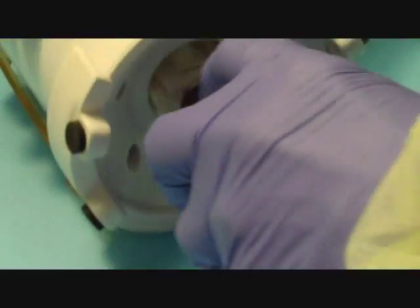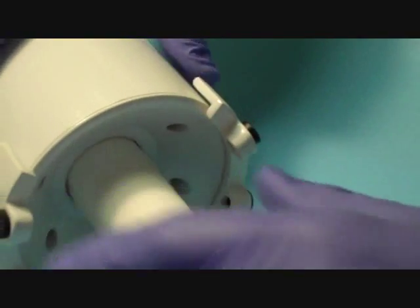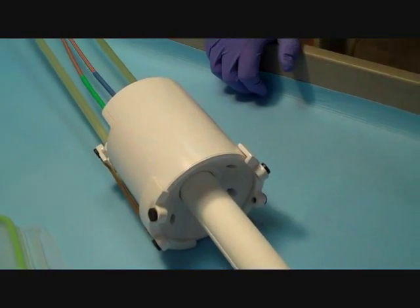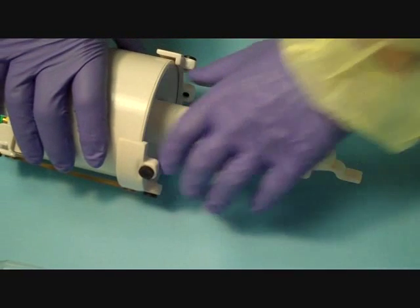Once the animal is in position, the body tube is inserted into a 36-millimeter quadrature transmit receive volume coil. The entire procedure takes less than one minute.